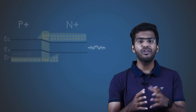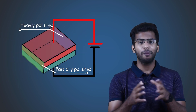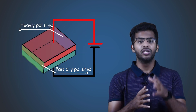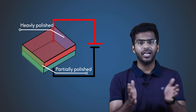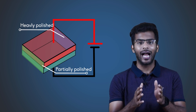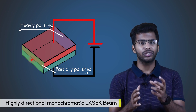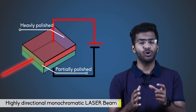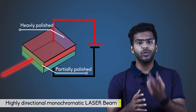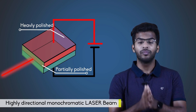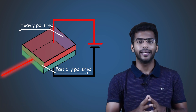As we have polished the two parallel surfaces of the P-N junction, the photons will travel back and forth and build up a highly directional monochromatic laser beam. The laser beam will come out from the partially polished plane.